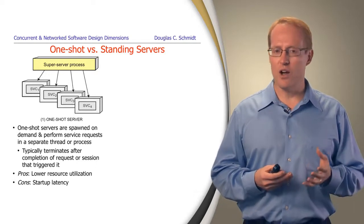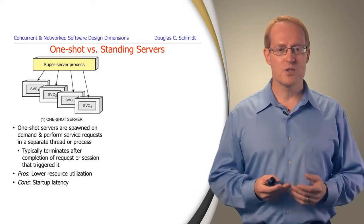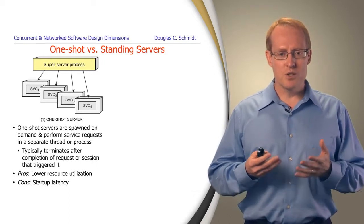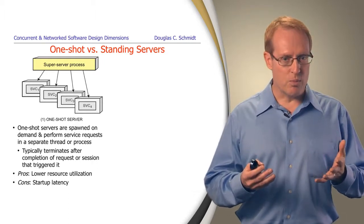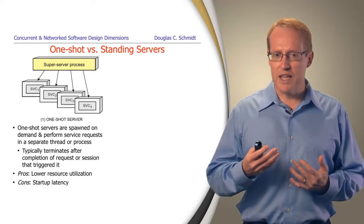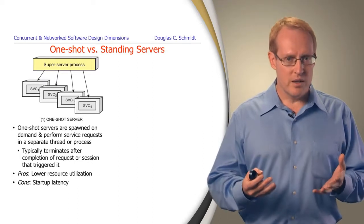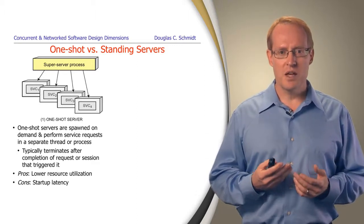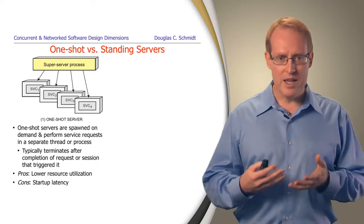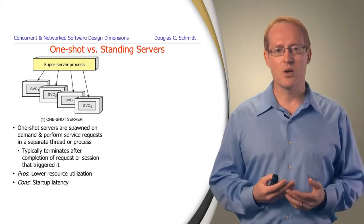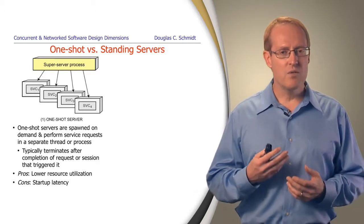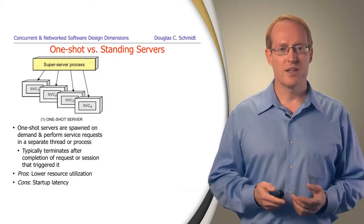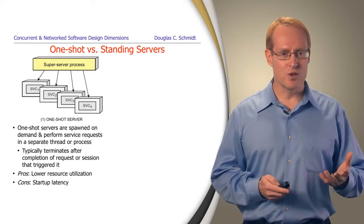Another design dimension involves one-shot versus standing servers. A one-shot server is spawned on-demand, performs service requests in a separate thread or process, and typically terminates after the particular request or session is done. The benefit is that resources like memory, processors, and CPUs are only used for the amount of time they're actually active. The downside is the additional overhead of starting up the one-shot server every time there's work to do.